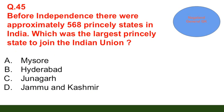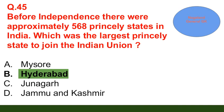Question number 45: Before independence there were approximately 568 princely states in India. Which was the largest princely state to join the Indian Union? Option A: Mysore; option B: Hyderabad; option C: Travancore; option D: Jammu and Kashmir. The correct answer is option B — Hyderabad.